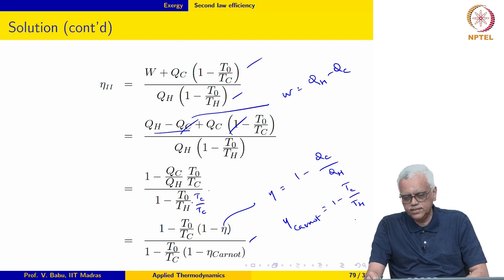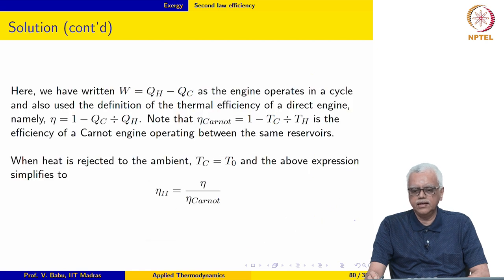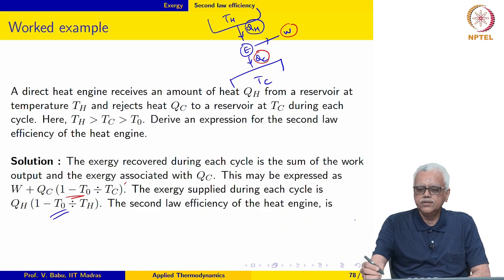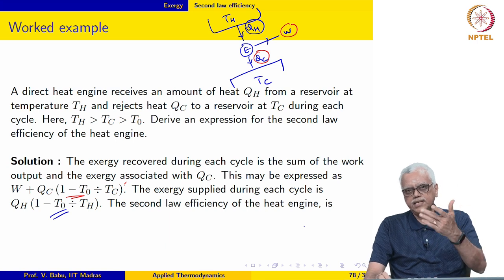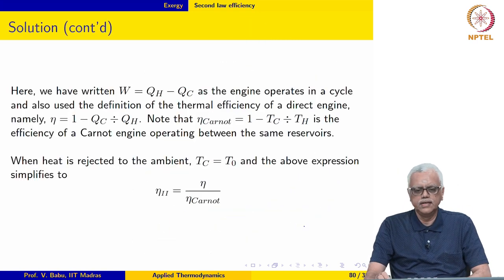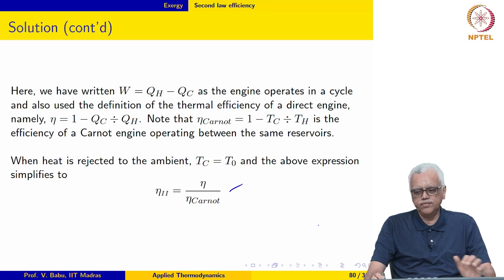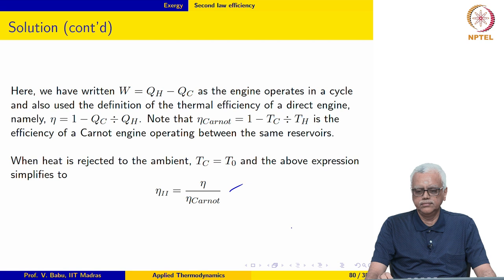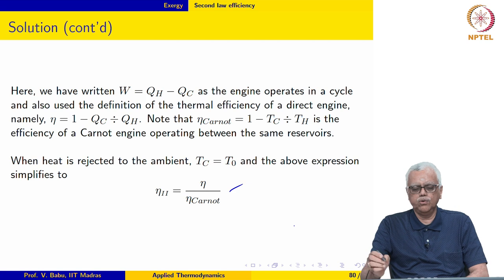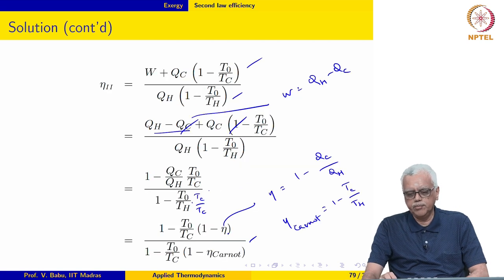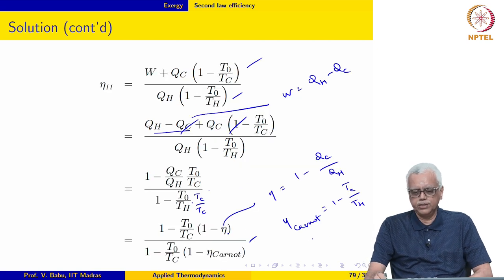Here eta is the actual efficiency of the cycle. In the denominator, we multiply and divide by TC and rewrite TC over TH using the Carnot efficiency: eta Carnot equals 1 minus TC over TH. This gives the second law efficiency expressed in terms of the first law efficiency and the Carnot efficiency. If heat is rejected to the ambient instead, so TC equals T0, the second law efficiency simplifies to just eta over eta Carnot.